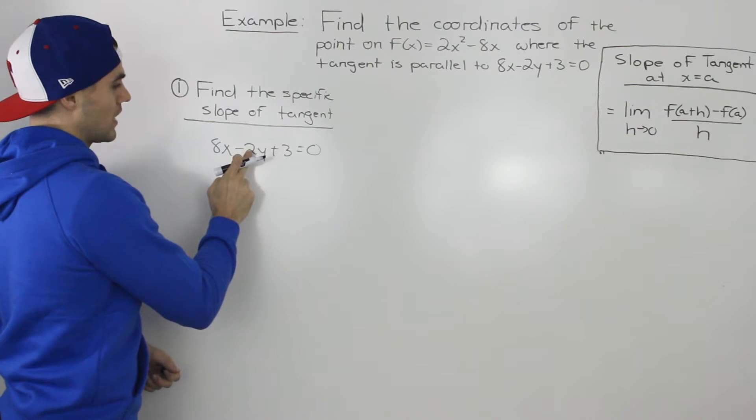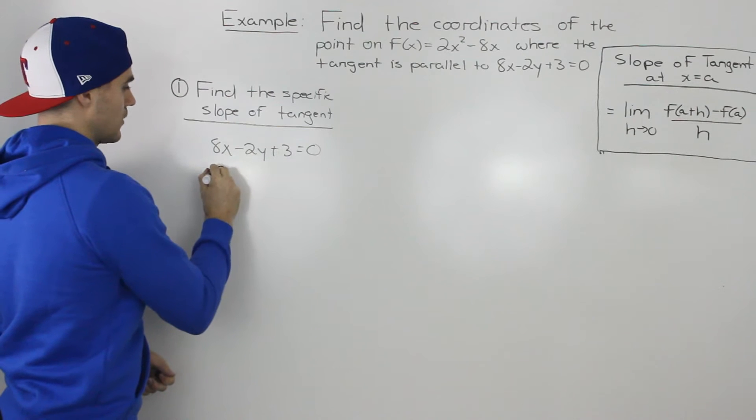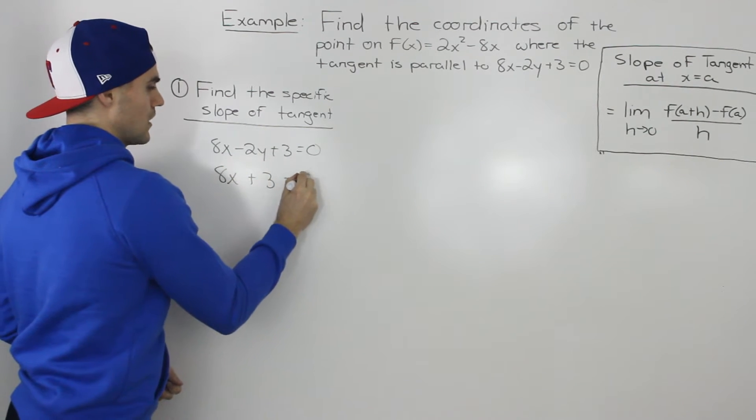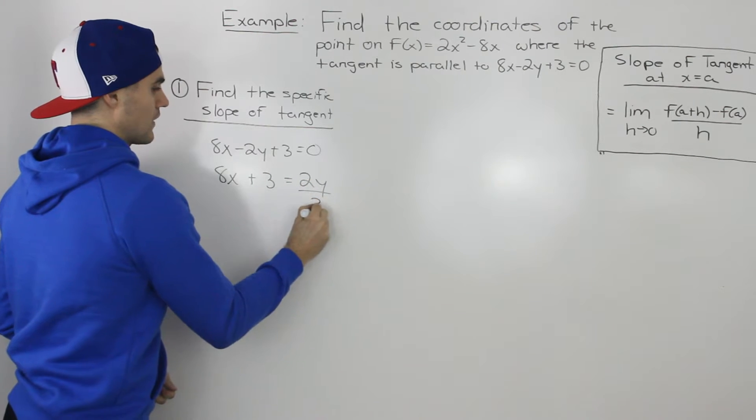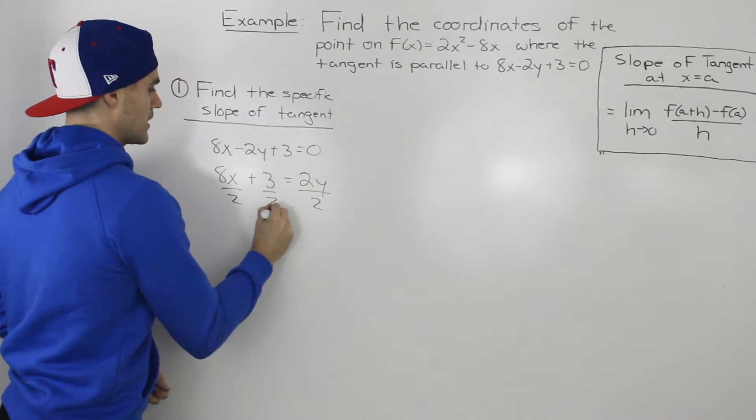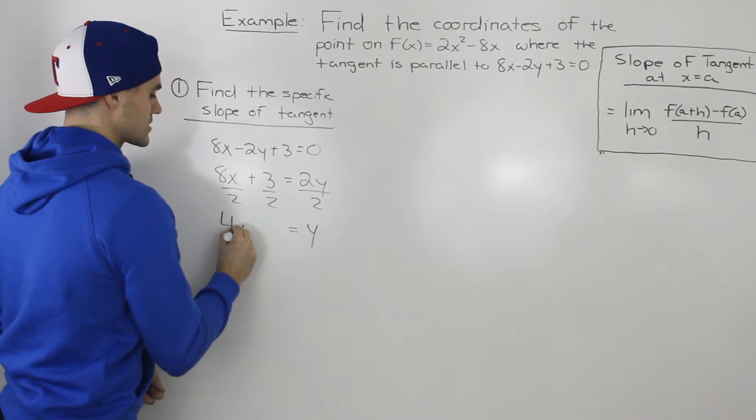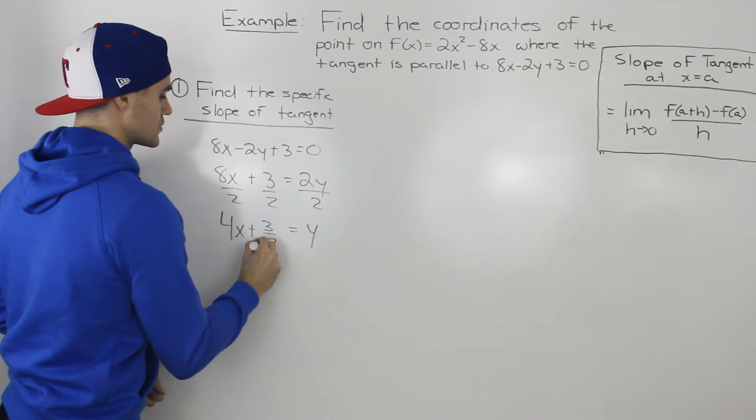So we can isolate for y. We can bring the -2y over to the right side, so we'd have 8x + 3 = 2y. And then isolating for that y, we would divide everything by 2. So we'd be left with y = 4x + 3/2.